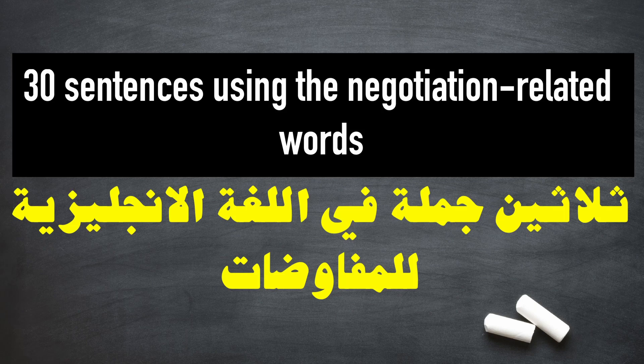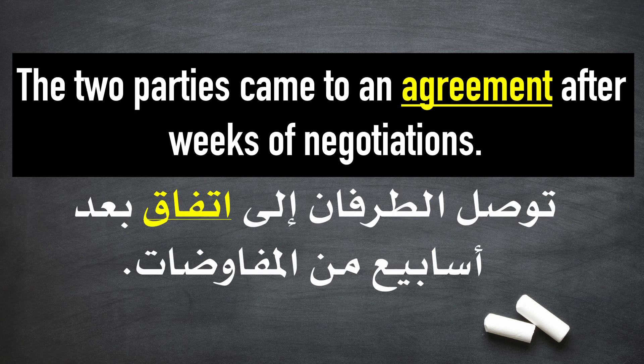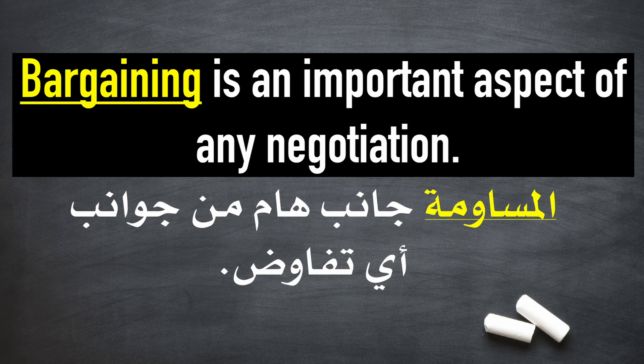Today, we're going to learn 30 terms in English that are really common in negotiations. Agreement: The two parties came to an agreement after weeks of negotiations. Bargaining: Bargaining is an important aspect of any negotiation.